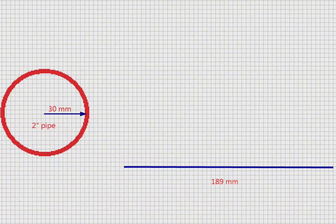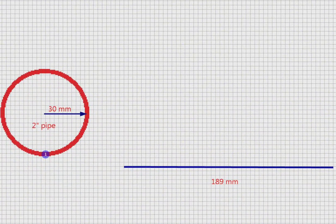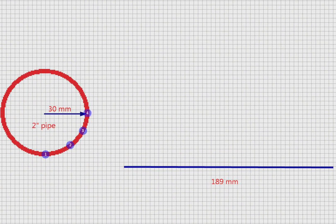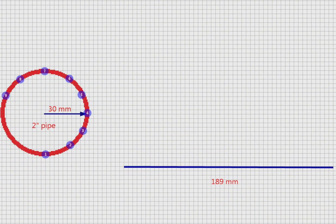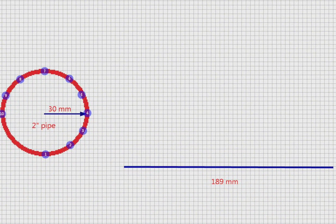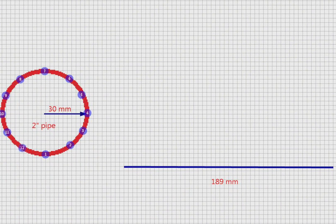We divide the perimeter of the pipe into 12 equal shares. It is also possible to increase the number of these parts in order to get the template more accurately.